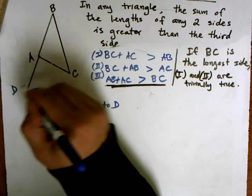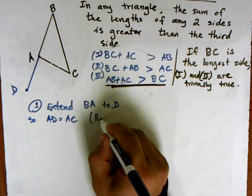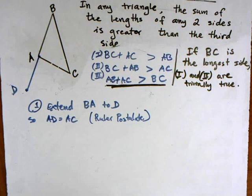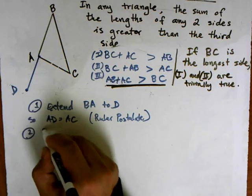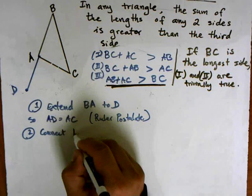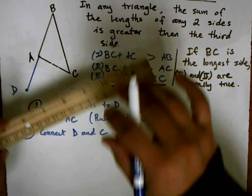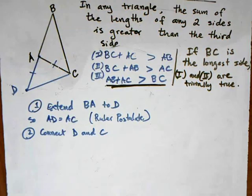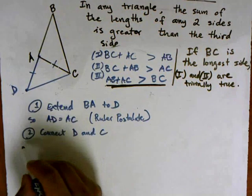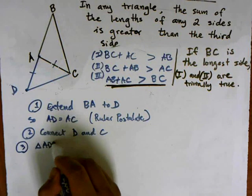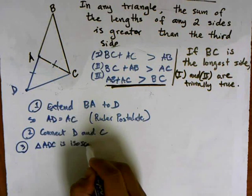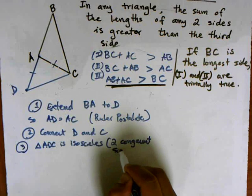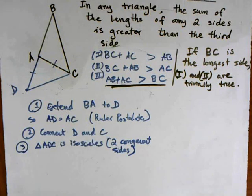The reason for this is the ruler postulate, which says that you can duplicate the length of any existing segment. In my second step we are going to connect D and C. Since we created AD to be congruent to AC, we can make those congruent marks, which allows us to say that triangle ADC is isosceles — it has two congruent sides.